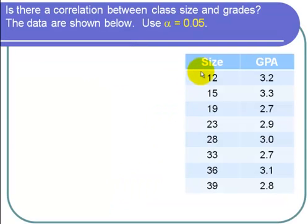Here are the data. We have class size and we have the grades or the grade point average. Notice for a class size of 12, the average grade point average for that class was 3.2.